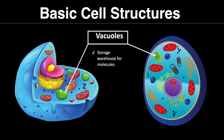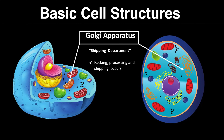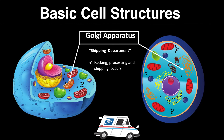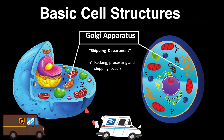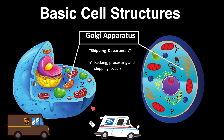Vacuoles are the storage warehouse for molecules. The Latin word vacuum means to empty. The Golgi apparatus is the cell's shipping department — it packs, processes, and ships. One way to remember this is to look at the 'US' at the end of apparatus and think of USPS or UPS, and how they package, process, and ship orders.